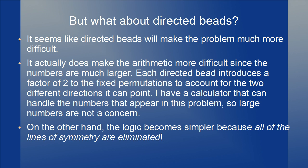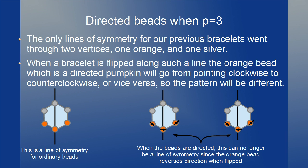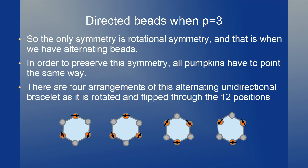I have a scientific calculator that can handle the numbers in this problem, so large numbers are not really a concern. On the other hand, the logic becomes simpler because all the lines of symmetry are eliminated. The only lines of symmetry for our previous bracelet went through two vertices — one orange and one silver. When a bracelet is flipped along such a line, the orange bead (a directed pumpkin) will go from pointing clockwise to counterclockwise or vice versa, so the pattern will be different. The only symmetry possible with directed beads is rotational symmetry — when we have alternating beads — and all orange beads have to point the same way. There are four arrangements of this alternating unidirectional bracelet as it is rotated and flipped through the 12 positions.